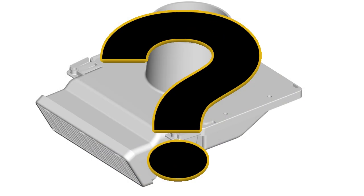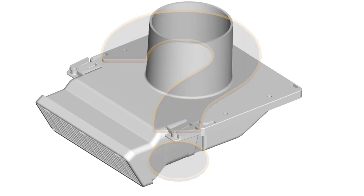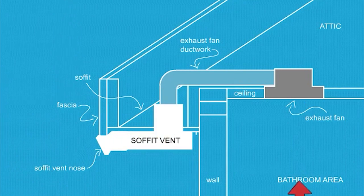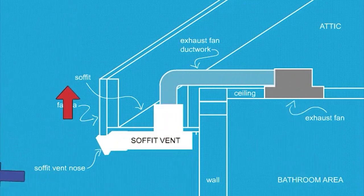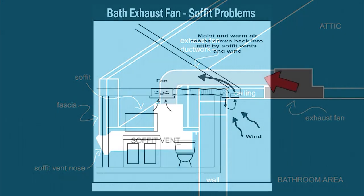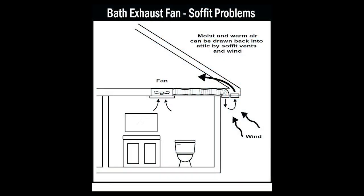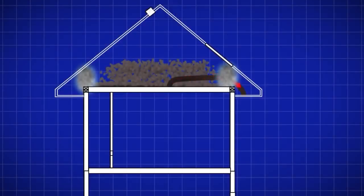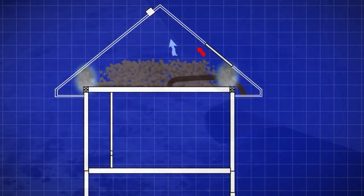How is the soffit vent from Moisture Flow different than all the other types of vents sold on the market? The difference is the soffit vent by Moisture Flow releases the moist air extracted by the exhaust fan outside the passive airflow of the soffit. All the other soffit vents release the moist air directly into the soffit's passive airflow, where it's drawn back into the attic.